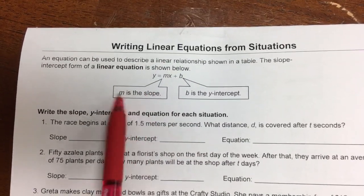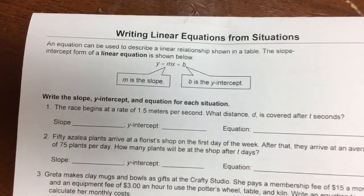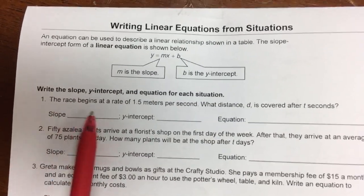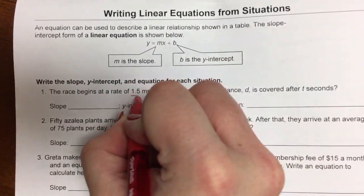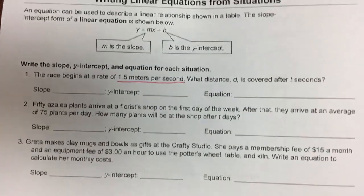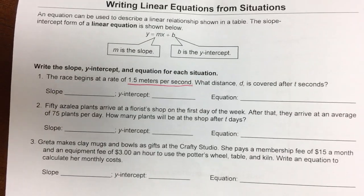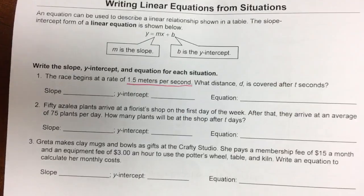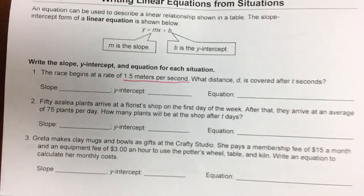So all you need to do from the problem is find the slope and the y-intercept. So the first one here, the race begins at a rate of 1.5 meters per second. What is the distance d? What distance d is covered after t seconds?